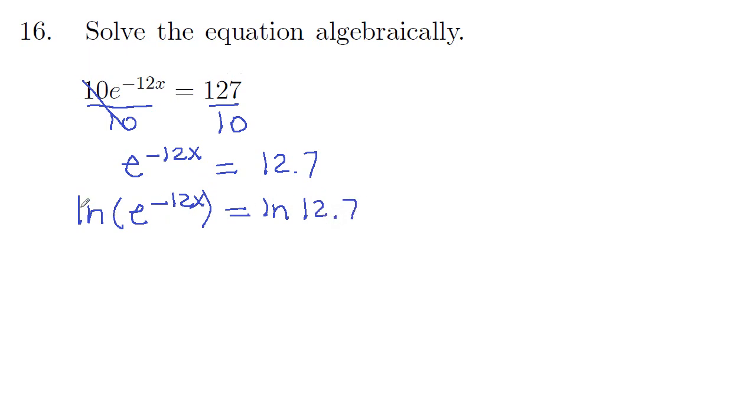On the left-hand side, ln and e cancel. It's cancellation law. So negative 12x is natural log of 12.7.